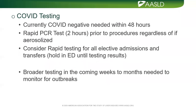For COVID testing, we currently want a negative PCR within 48 hours for most cases. We are doing rapid PCR testing — about one to two hours from collection to result — for procedures, regardless of whether they are aerosolized or not, and this is becoming the norm even for basic radiology. We are considering rapid testing for all elective admissions and transfers, with patients going to a holding area to be swabbed and confirmed negative or positive before going to the appropriate unit. Broader testing over the coming weeks and months will be needed to monitor for outbreaks.